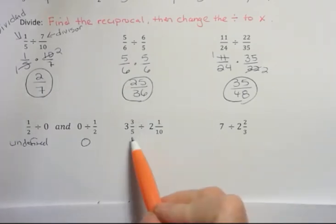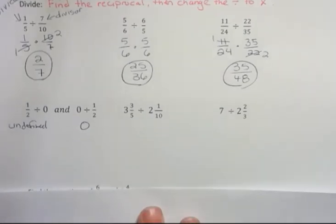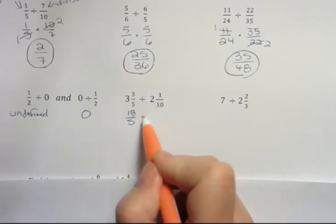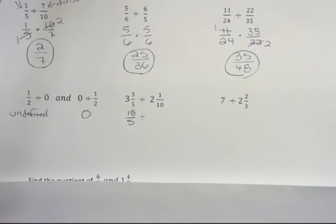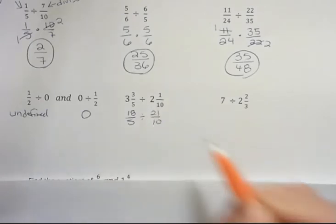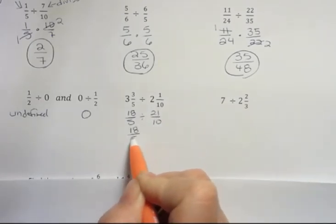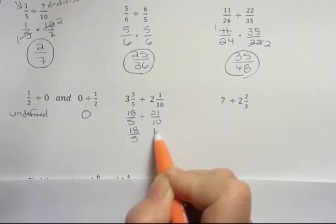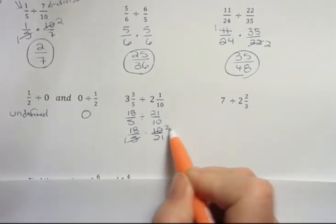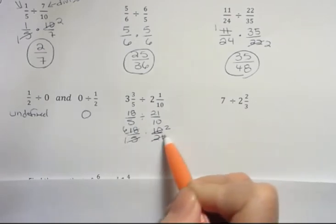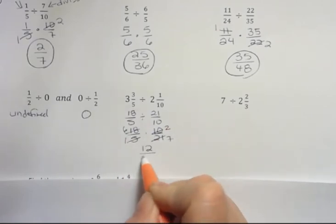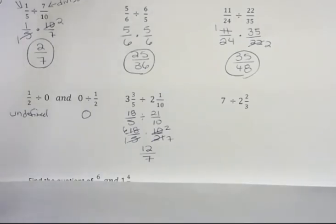We have to change these fractions into improper before we can work with them. 3 times 5 is 15 plus 3 is 18. And then I'm not changing that division symbol yet because I'm still working on getting them into the proper form. 2 times 10 is 20 plus 1 is 21. Now I'm going to do this. Keep the dividend the same. Find the reciprocal for the divisor and multiply. 5 goes into itself once and into 10 twice. 3 goes into 18 six times and into 21 seven times. And if I multiply straight across, 6 times 2 is 12 and 1 times 7 is 7.